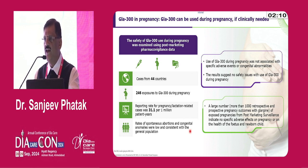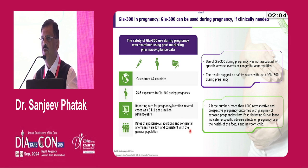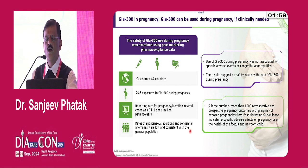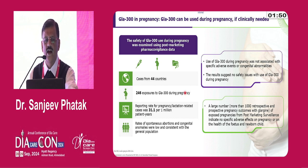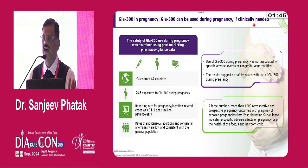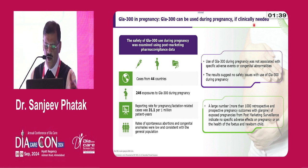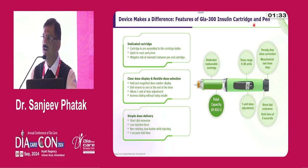Regarding pregnancy: for many years we have believed only NPH and detemir can be used in pregnancy. However, according to the DCGI label indication, glargine can be used in pregnancy if clinically indicated — the same indication applies to most other basal insulins as well. So you can safely use glargine U100 or U300 in pregnancy if clinically indicated.